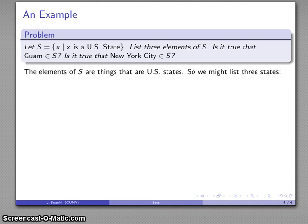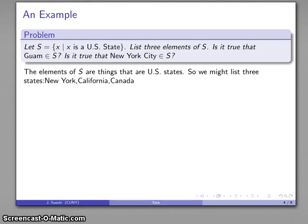So we might list three states. How about New York, California, Canada? Oh, wait, no. This is not a geography class, but you should know Canada is not a U.S. state. How about Utah? So there's three things that are in the set S.